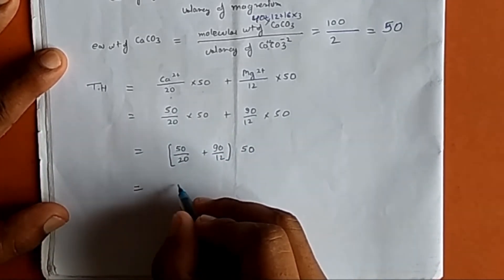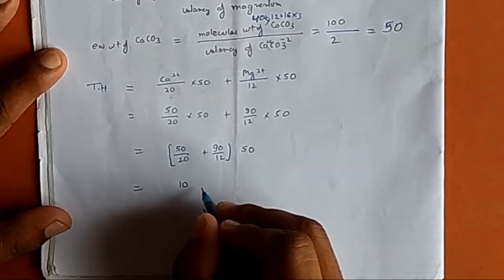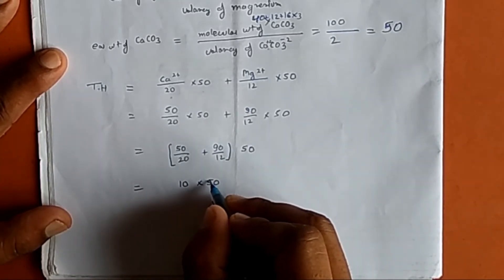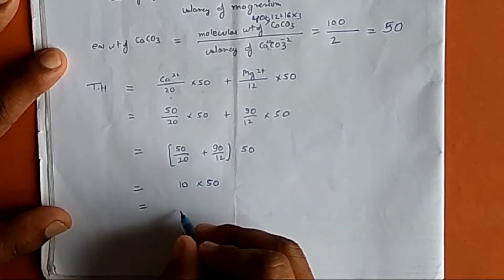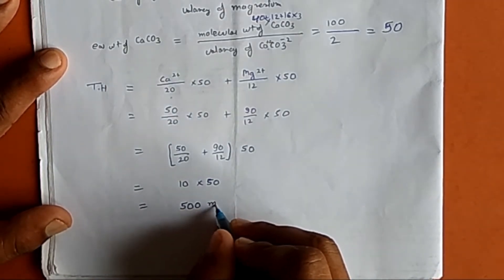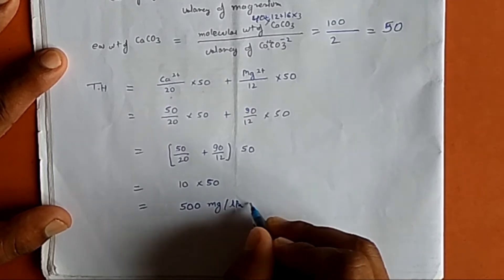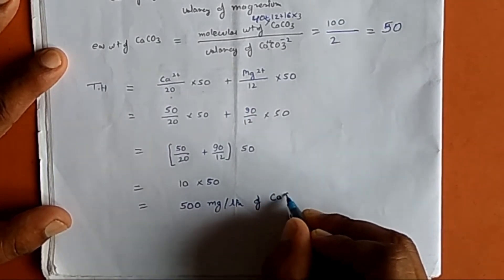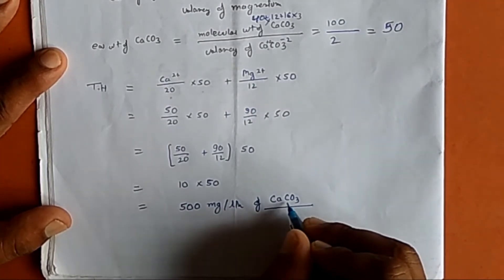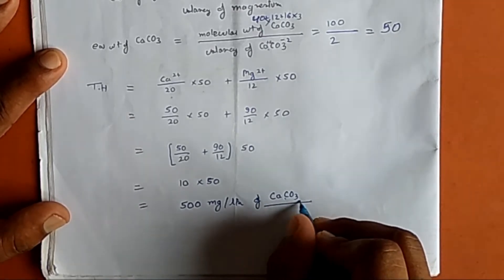Resolving this equation we get 10 × 50. Total hardness comes out to be 500 mg per litre of CaCO₃. This is important because we have solved it in terms of calcium carbonate.